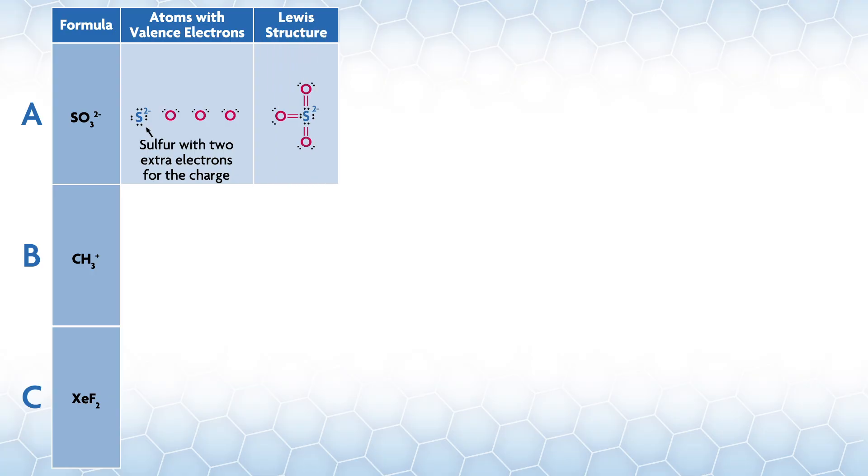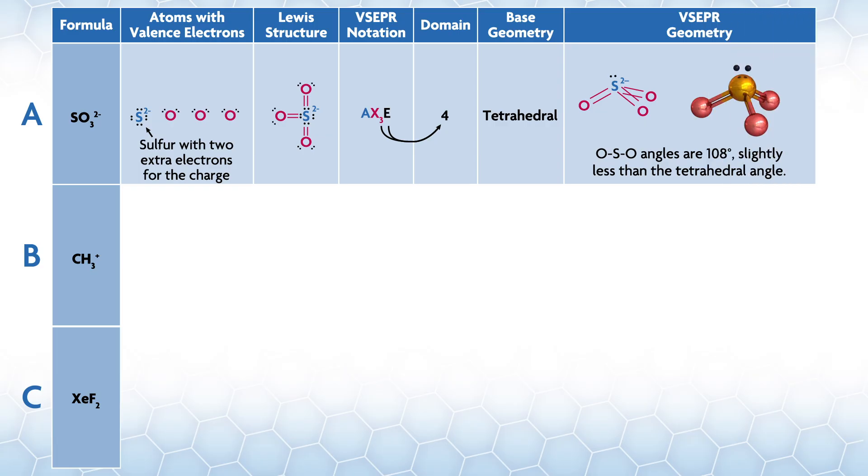For A, we have a sulfur compound with a two minus charge. We can think of putting the charge on the sulfur at the start, or do it later. Let's just do it now. Then we can make double bonds to three oxygens. This leaves a single lone pair on the central atom, so the formula is AX3E with a tetrahedral base structure. The lone pair has a slightly larger domain, here even than the double bonds, and the O-S-O angles are 108 degrees, slightly less than the tetrahedral angle.